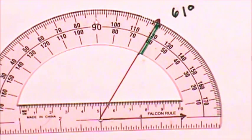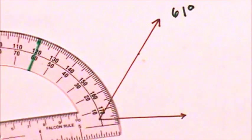I know the angle measures 61 degrees and not 121 degrees because when I look at my angle, I know that it is an acute angle because it is smaller than a right angle.